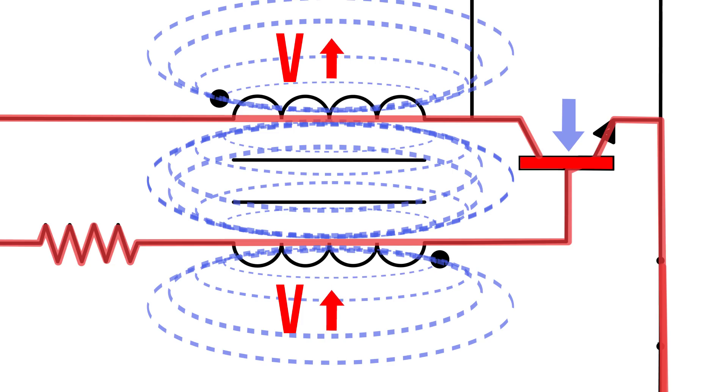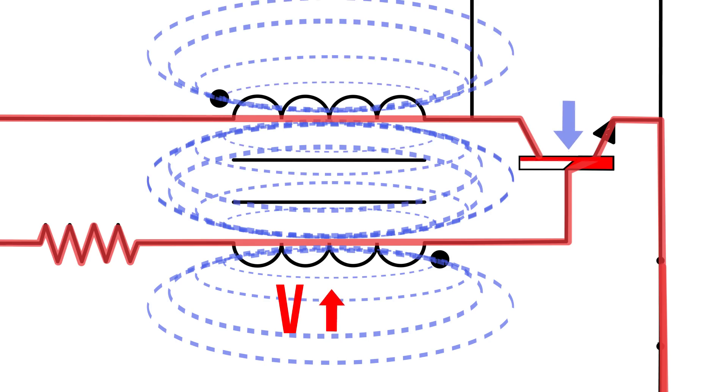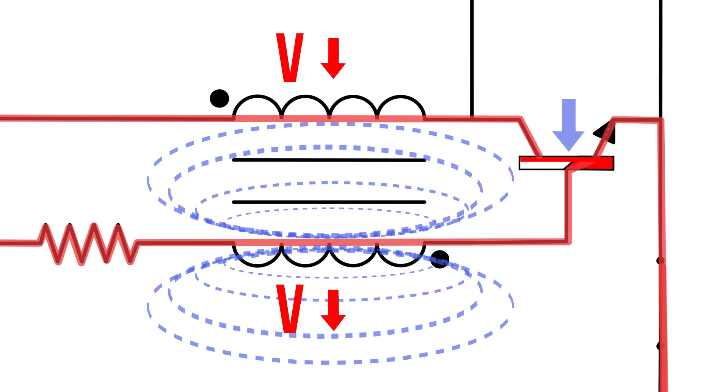Eventually, the transistor is fully open and the electricity flowing through the second coil reaches a maximum. Since there's no longer a change in current, the magnetic field of the second coil shrinks and stops inducing a voltage in the first coil. This causes the collector emitter channel to begin to close. So you end up with these waves of voltage, with the channel through the transistor opening and closing, with higher voltages being induced across the coils.